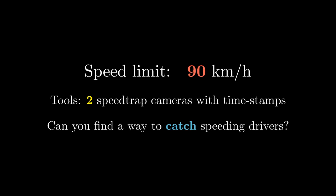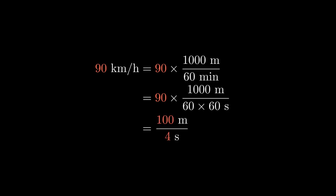We're going to first simplify the problem by converting this into meters per second. One kilometer is a thousand meters, while an hour is 60 minutes, but one minute is 60 seconds. So doing the arithmetic, we obtain 100 meters for every 4 seconds. This simplifies to 25 meters per second.